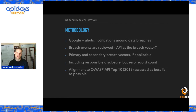It's rarely just one thing that goes wrong — it's usually a combination of factors together that leads to compromises and breach events. So we try to classify what's the primary breach vector and what's the secondary breach vector.